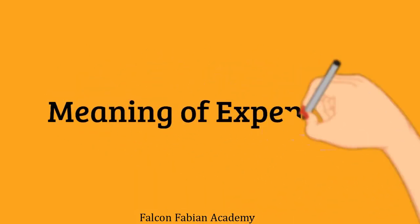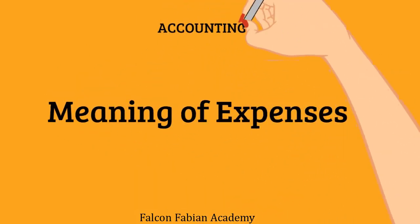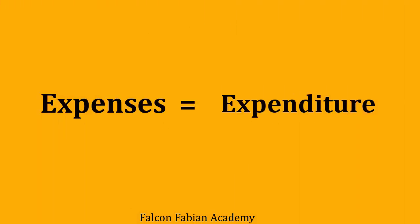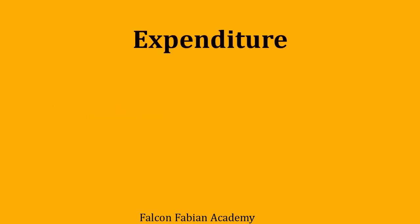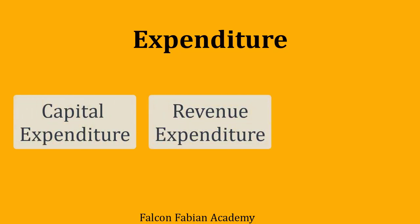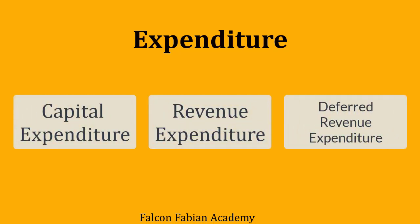Let's understand the meaning of the term expenses in accounting. It is often considered that expenses and expenditure mean the same, but in accounting these two terms have separate meanings. The term expenditure is a broader term, and expenses is a part of expenditure. Expenditure is of three types: capital expenditure, revenue expenditure, and deferred revenue expenditure. Here we are just trying to understand how expenses is different from expenditure.